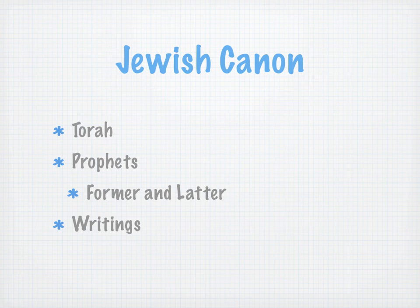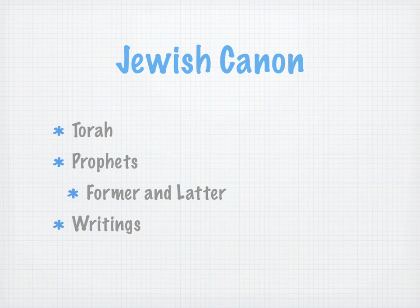Of secondary importance are the writings of the prophets. They would make a distinction between former and latter prophets. Those that we find in these six books — Joshua, Judges, 1 and 2 Samuel, 1 and 2 Kings — are listed among the prophetic books.